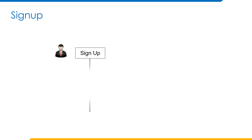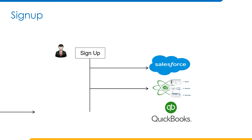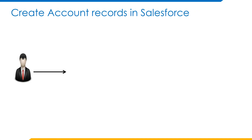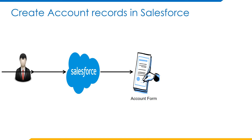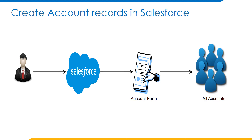For this integration, we need three orgs: Salesforce, QuickBooks, and Boomi AtomSphere. First, sign up into Salesforce, sign up into Boomi AtomSphere, and QuickBooks. After successful sign up, login into Salesforce by giving a valid username and password, go to the Accounts tab, create account records, and save them. There we will find all accounts. This account object will act as the source object, and these records are to be inserted into QuickBooks customers.